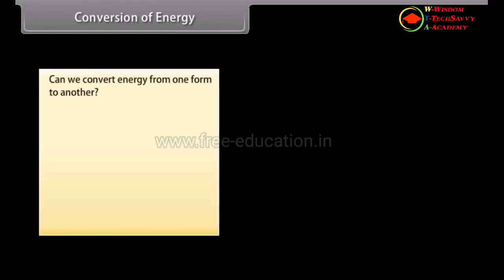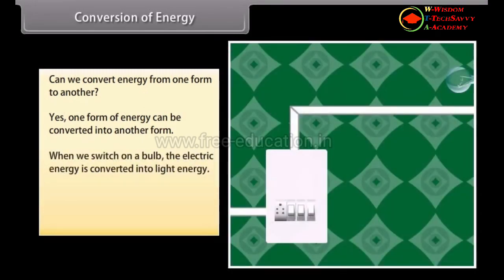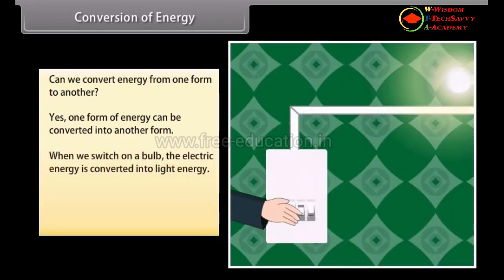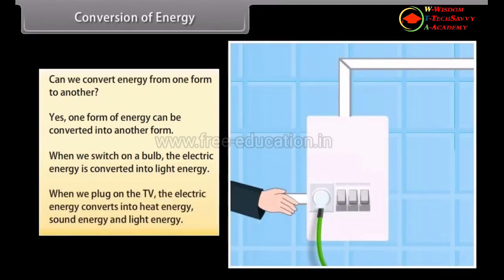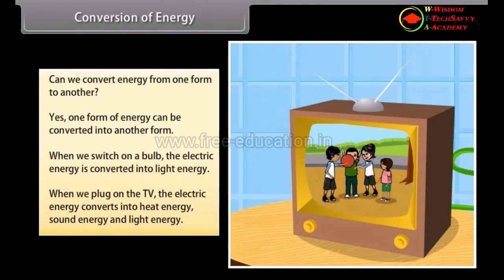Conversion of energy. Can we convert energy from one form to another? Yes, one form of energy can be converted into another. For example, when we switch on a bulb, electrical energy is converted into light energy. Similarly, when we turn on the TV, electrical energy converts into heat energy, sound energy, and light energy.